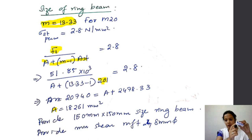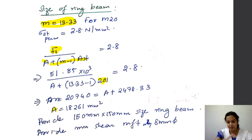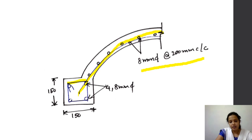From the area calculation, we provide the ring beam as a square cross-section of 150 mm × 150 mm with nominal stirrups of two-legged 8 mm diameter bars. The reinforcement detailing shows 8 mm bars at 200 mm c/c in both longitudinal and meridional directions for the dome, and 4 numbers of 10 mm bars in the ring beam with 2-legged 8 mm stirrups.